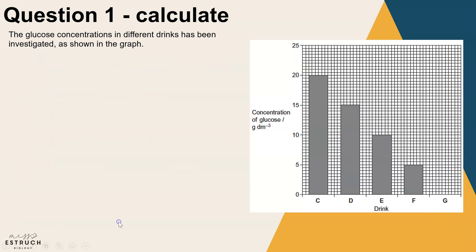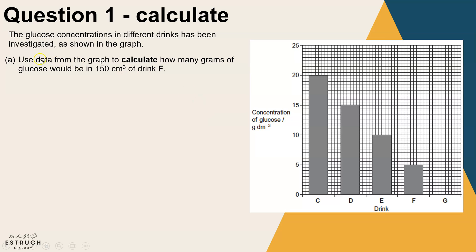We'll have a look at the first question — a calculate question. We're told that the glucose concentrations in different drinks has been investigated and the results are shown in a graph. We've got five different drinks, with the concentration of glucose in grams per decimetre cubed. The first question is: use the data from the graph to calculate how many grams of glucose would be in 150 centimetres cubed of drink F. The first thing to be aware of is they are giving us a volume in centimetres cubed, but the graph uses decimetres cubed — so at some point you will need to do that conversion.